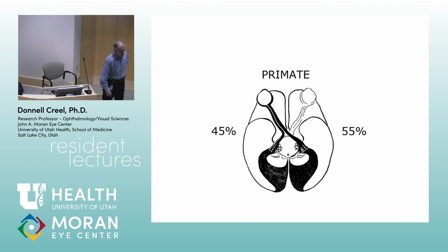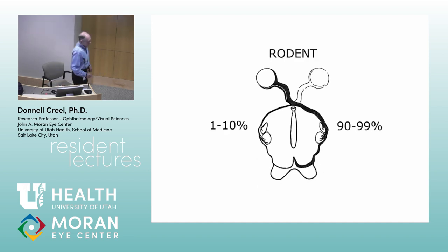Here's our primate visual system. In no animal is there 50-50. Humans and some arboreal primates really depend on good stereo vision because you only get to miss a limb once if you're 100 feet above the ground. It's about 45% that don't cross and 55% that do. You can guesstimate the number of ipsilateral fibers from eye placement on the head, because it increases as temporal retina increases.